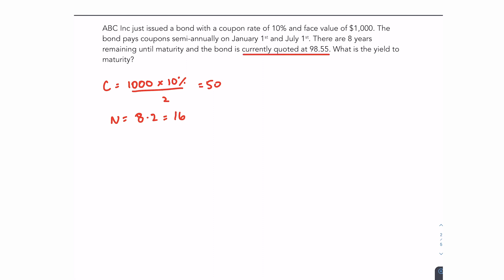The bond is currently quoted at 98.5. That is a bond quote. That means that the price today is 98.55% of the face value, so of a thousand. That means that the bond right now is trading at $985.50. And our face value is 1000.